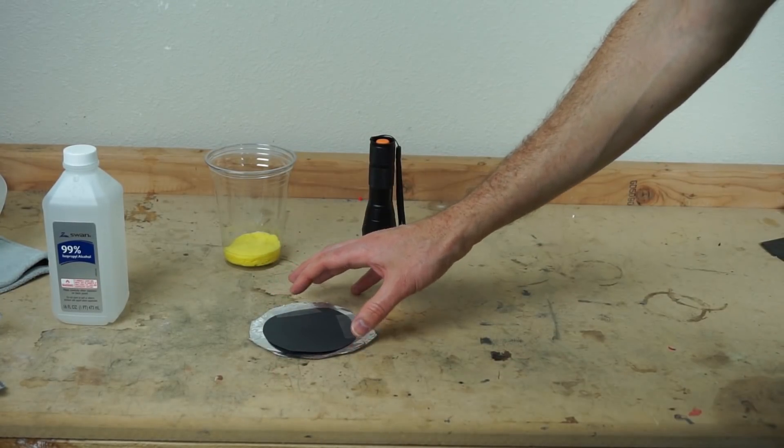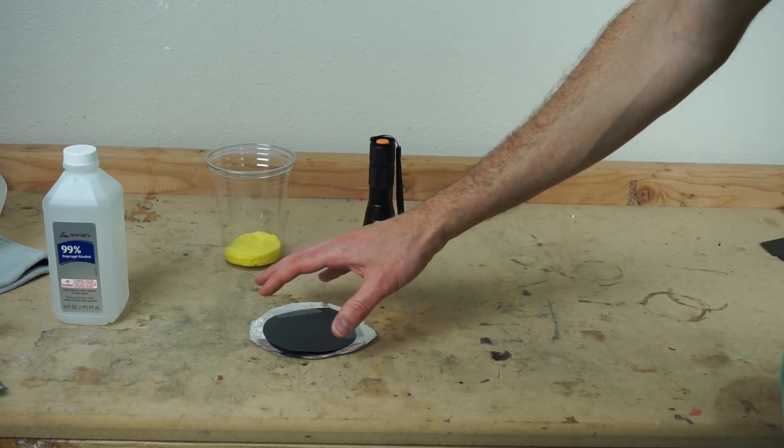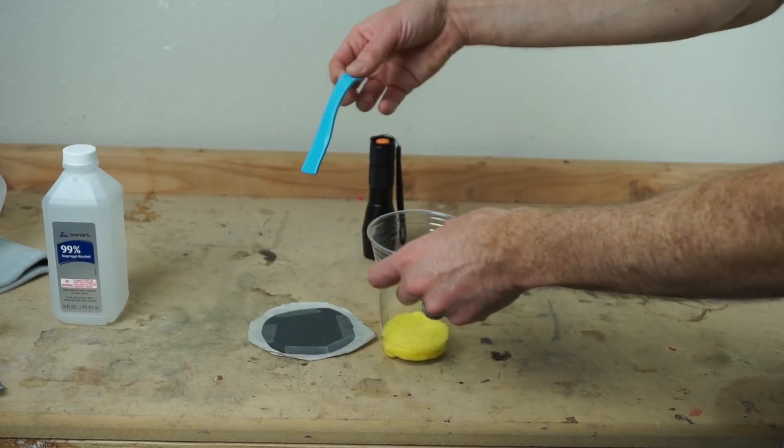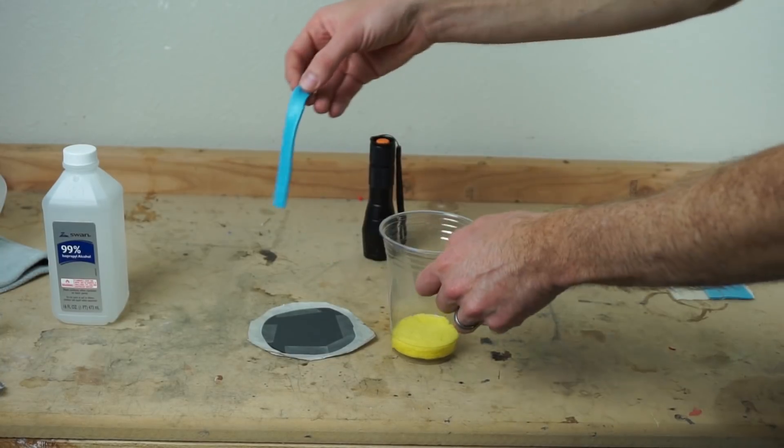So all this black paper is for is so that you can see the radiation better. Then you just need some sticky tack stuff that you can put around the edge of the cup and this will just act as the seal.